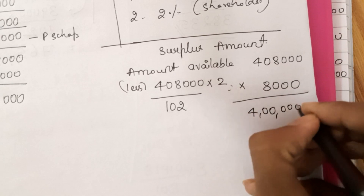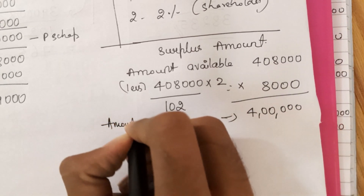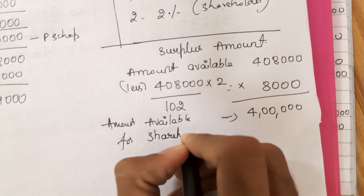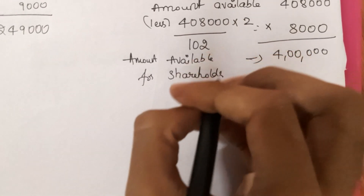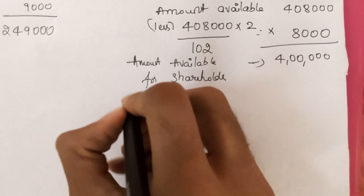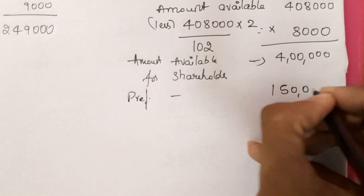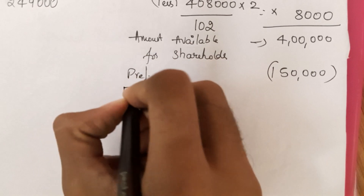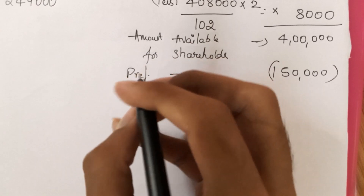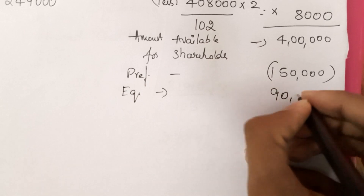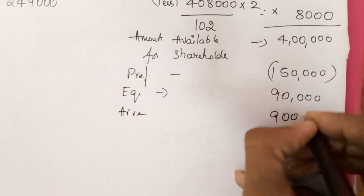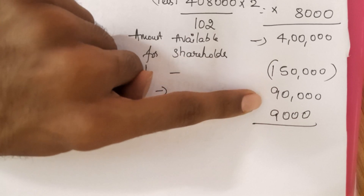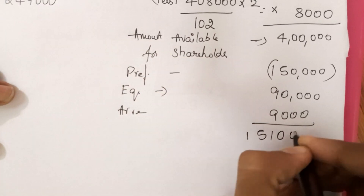From the 4,00,000 available for shareholders, we distribute: preference share capital 1,50,000, equity share capital 90,000, and arrears 9,000. So 4,00,000 minus 1,50,000 minus 90,000 minus 9,000 equals a surplus of 1,51,000. This surplus of 1,51,000 is to be distributed between preference and equity shareholders.